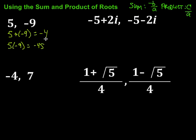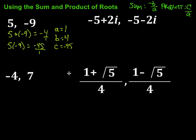We need to write them both over A, so in this case they'll each be over 1. So A is 1. B comes from the sum — the sum is negative B over A, and our sum is negative 4, so B is going to be positive 4; it's really the opposite of whatever's sitting there. Then C is the numerator of the product, which in this case is negative 45. So our quadratic equation in the form AX squared plus BX plus C is X squared plus 4X minus 45.